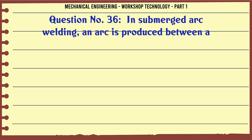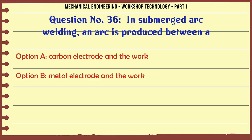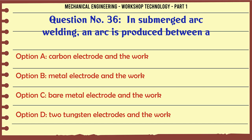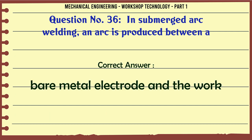In submerged arc welding, an arc is produced between: A. Carbon electrode and the work. B. Metal electrode and the work. C. Bare metal electrode and the work. D. Two tungsten electrodes and the work. The correct answer is: Bare metal electrode and the work.